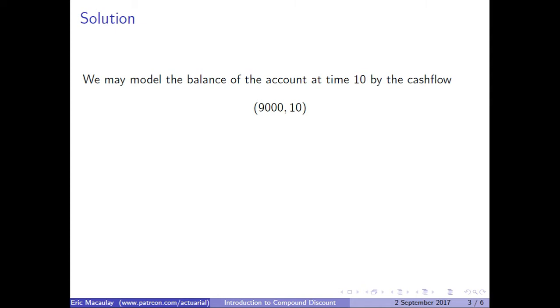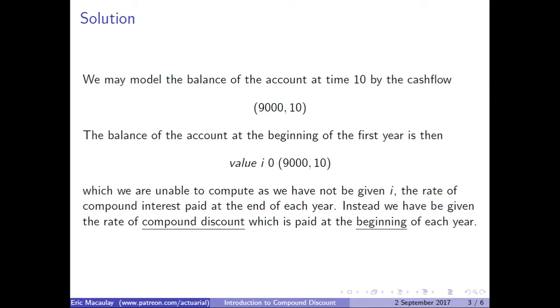We model the balance of the account at time 10 by the cash flow of £9,000 at 10. The balance of the account at the beginning of the first year is then value I 0 of £9,000 at 10, which we are unable to compute as we have not been given i, the rate of compound interest paid at the end of each year. Instead we have been given the rate of compound discount which is paid at the beginning of each year.